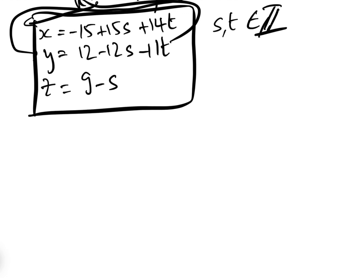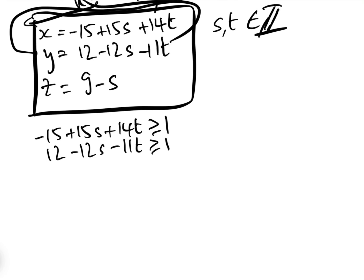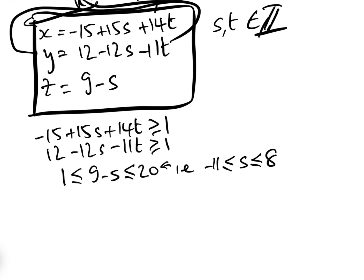Now, there are a lot of constraints to apply. First, the number of singles x ≥ 1, so −15 + 15s + 14t ≥ 1. We also know the number of fours y ≥ 1, so 12 − 12s − 11t ≥ 1. And the number of sixes is between 1 and 20 — maximum one six per over — so 1 ≤ 9 − s ≤ 20. We can solve this last one straight away: s must be ≥ −11 and ≤ 8.